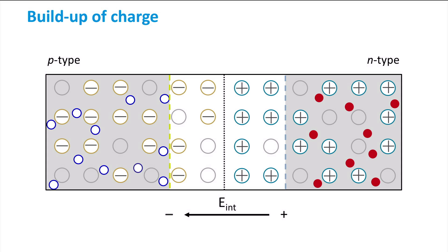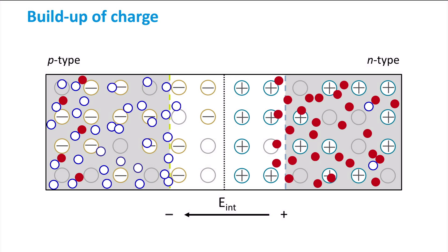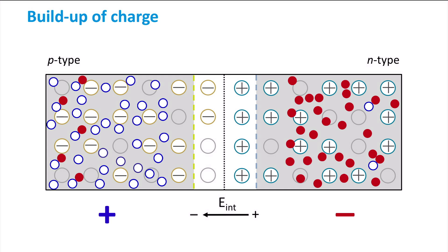To summarize: under illumination, charge carriers are generated in the P-N junction. The minority charge carriers that diffuse towards the depletion region will be drifted through the depletion region. Electrons will drift towards the N-type region and holes towards the P-type region, respectively, where they become majority charge carriers. These extra photo-generated majority charge carriers build up a negative charge in the N-type material and a positive charge in the P-type material. The resulting potential difference is in the opposite direction of the internal electric field across the depletion region.